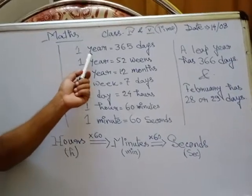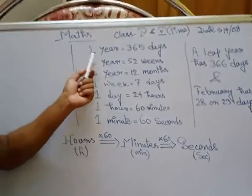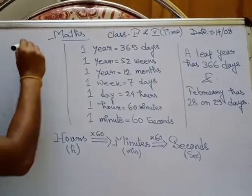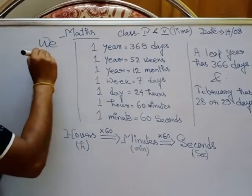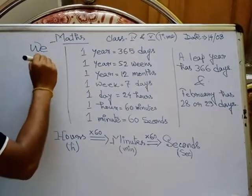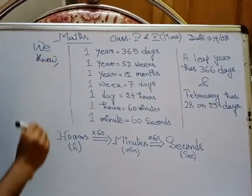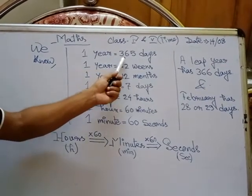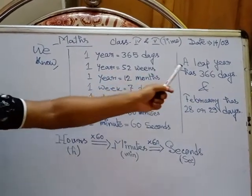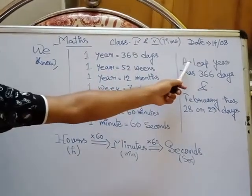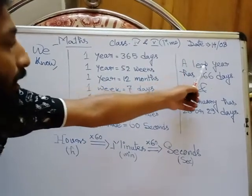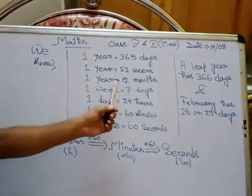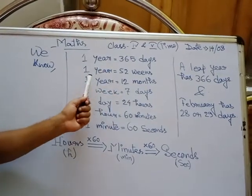Today's chapter is about time. 1 year is equal to 365 days. If a year is a leap year, then it will be 366 days in a year.